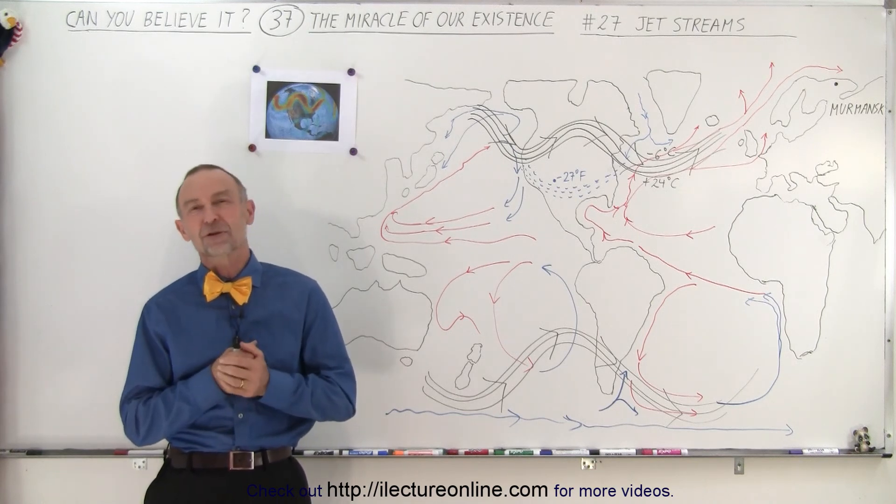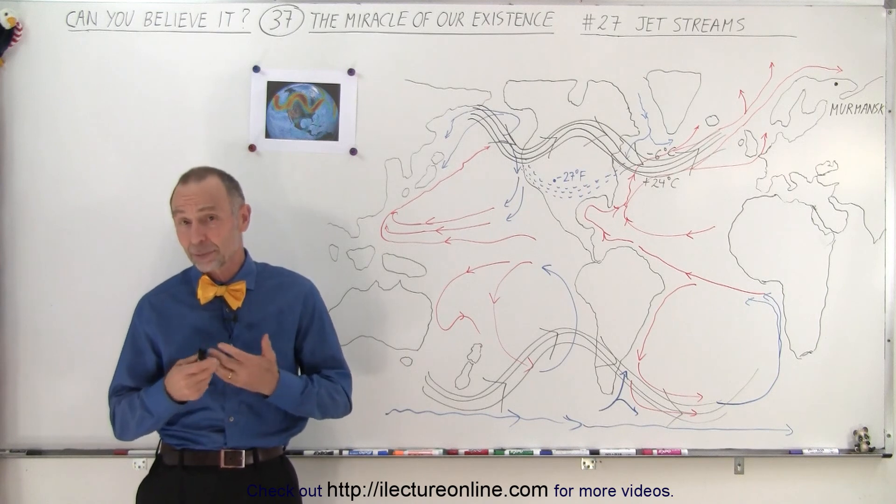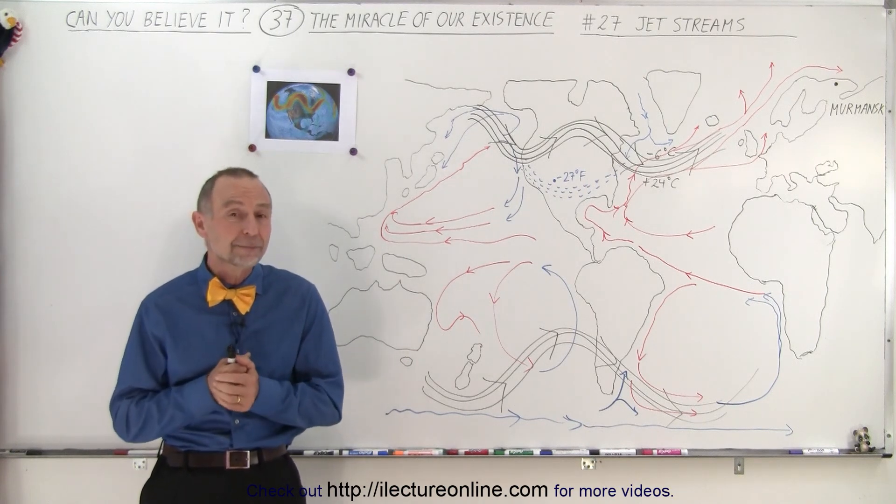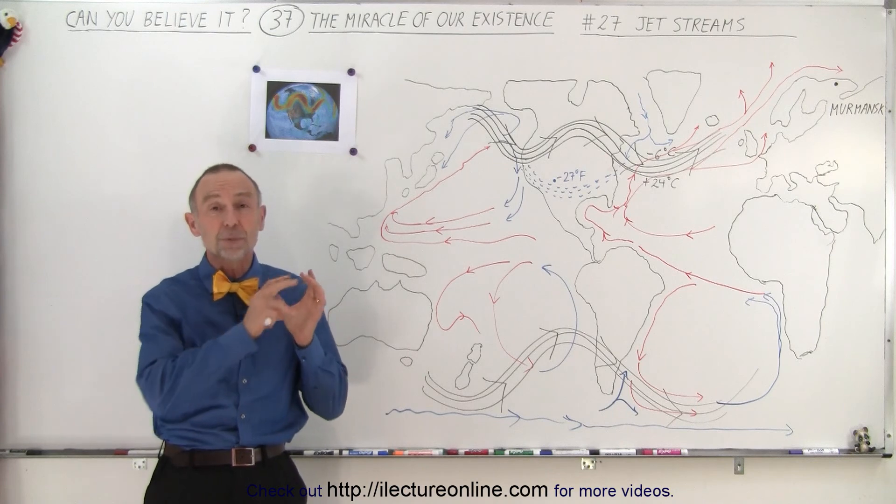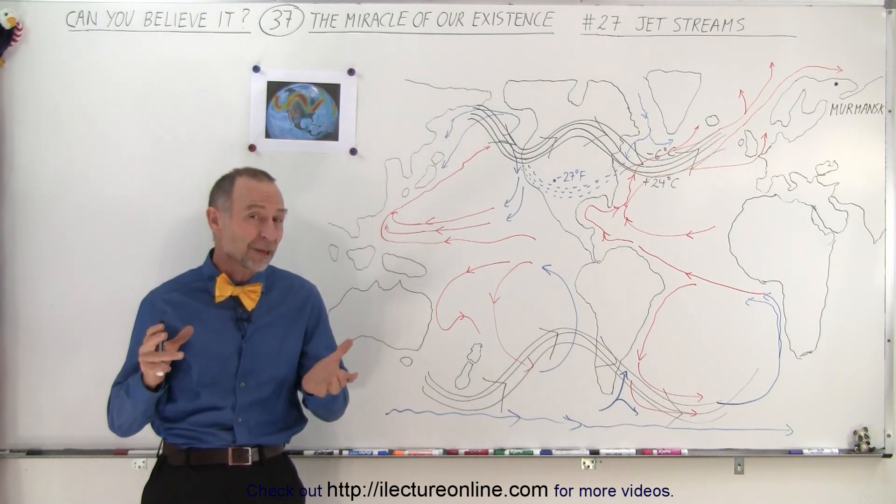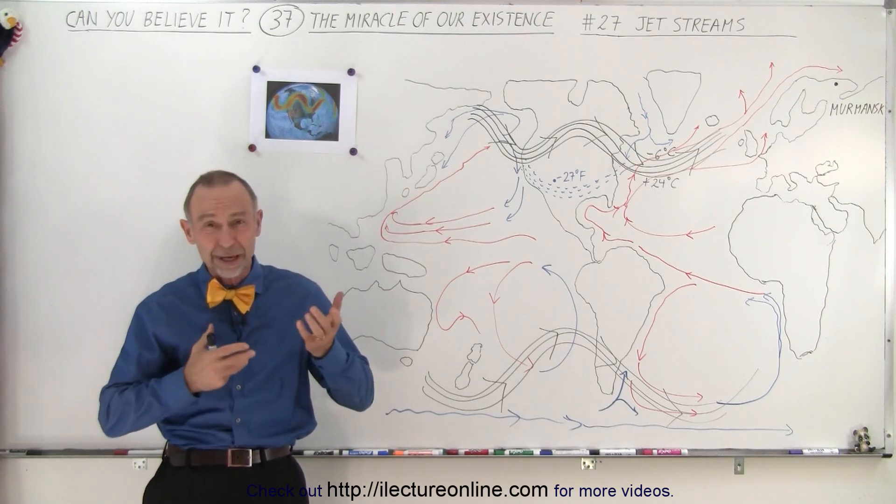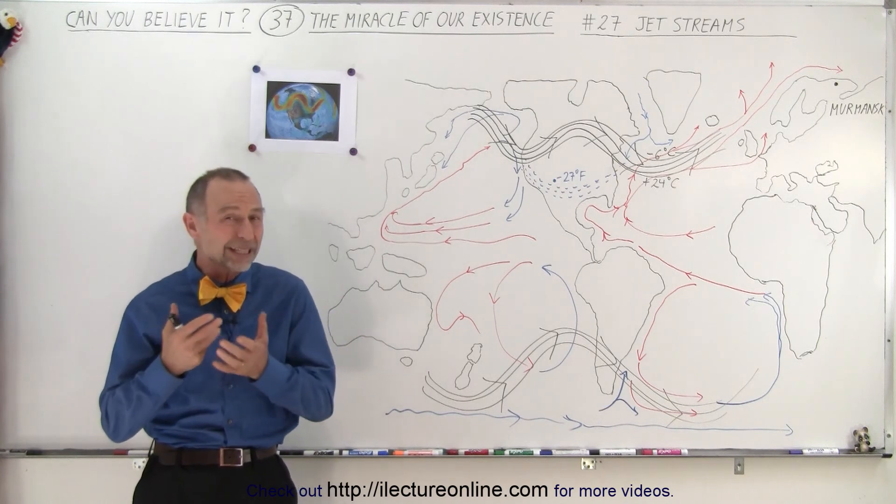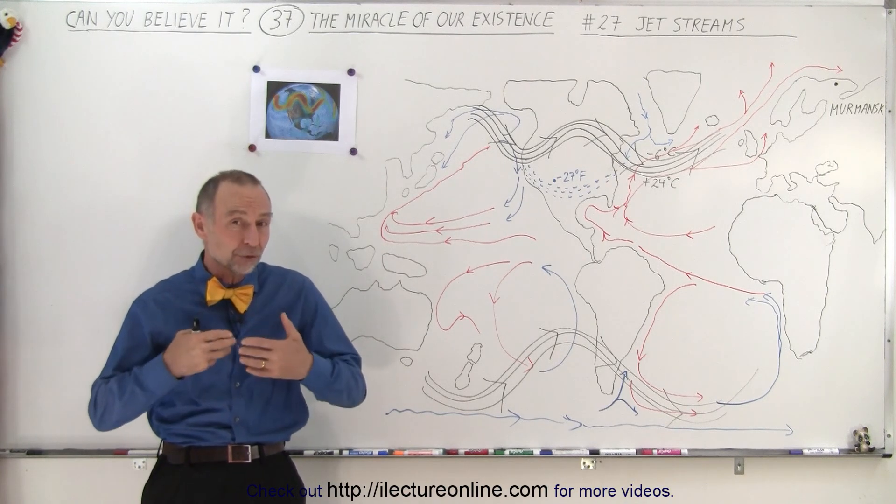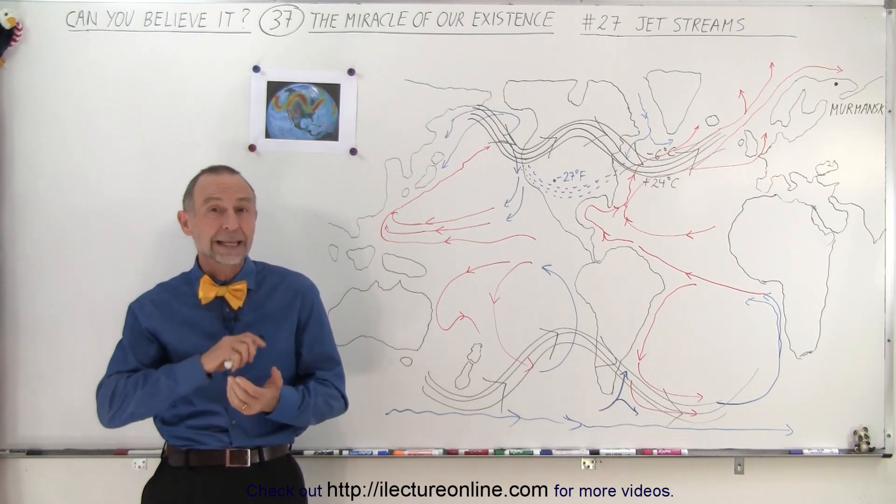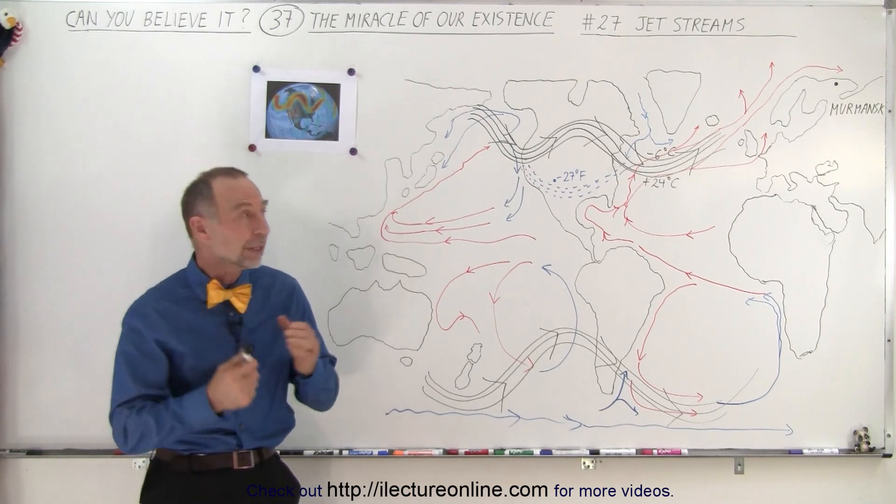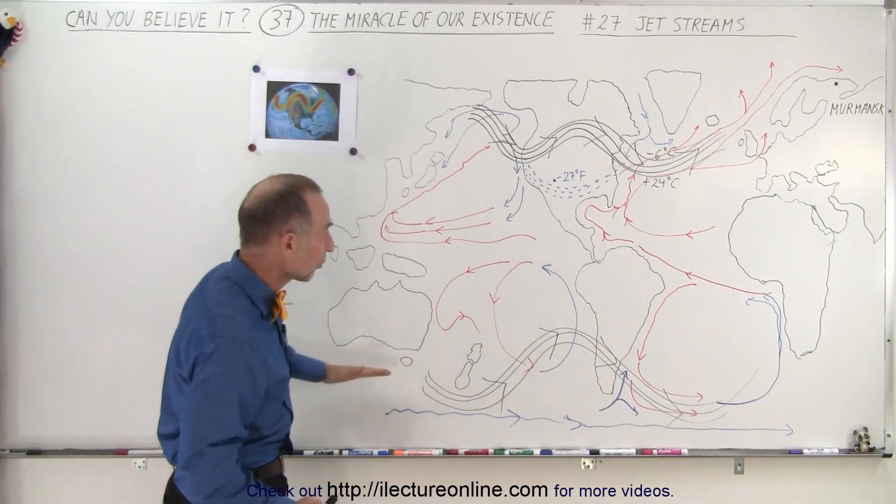Now that's something we don't hear much about on a daily basis unless perhaps you're an airplane pilot. These are huge masses of air that move around the world at very high speeds, typically anywhere from 80 to 100 to 120 miles per hour, so upwards of 200 kilometers per hour, and they circumvent the world both in the northern hemisphere and the southern hemisphere.